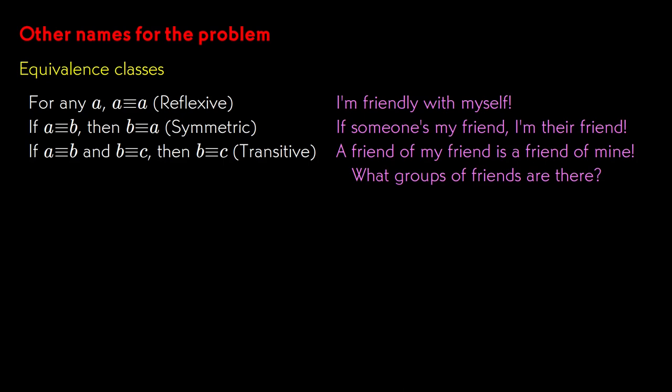Imagine you have a group of people at a party, and everybody follows three rules. They're friendly with themselves. If Alice is friends with Bob, then Bob is friends with Alice. If Alice is friends with Bob, and Bob is friends with Carla, then Alice is friends with Carla. You'll learn about individual pairs of friends, and want to answer, what is the greatest possible number of distinct groups of friends, given what you know?